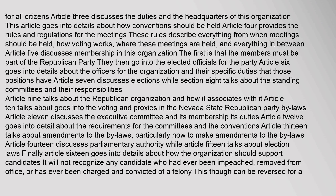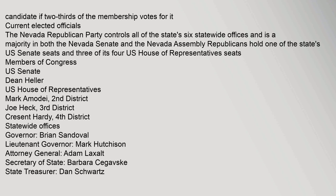Article 6 details the party officers and their specific duties. Article 7 discusses elections, while Article 8 covers standing committees and their responsibilities. Article 9 discusses the Republican organization and its associations. Article 10 covers voting and proxies. Article 11 discusses the executive committee, its membership, and duties. Article 13 covers amendments to the bylaws. Article 14 discusses parliamentary authority, Article 15 covers election laws, and Article 16 details how the organization should support candidates. It will not recognize any candidate who has been impeached, removed from office, or convicted of a felony — though this can be reversed if two-thirds of the membership votes for it.